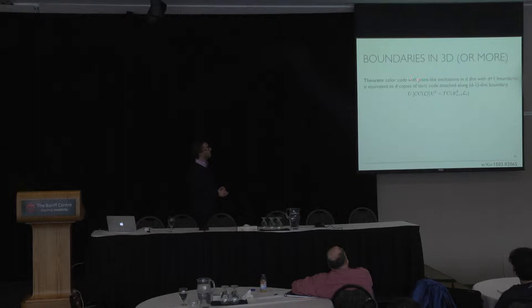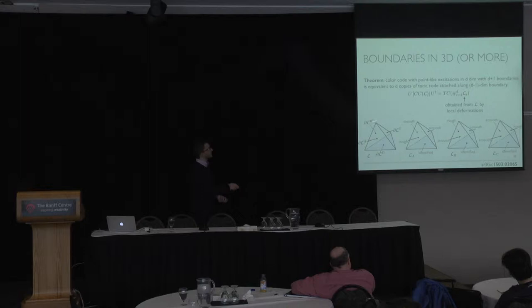In three dimensions, what we showed is that if we have the color code with point-like excitations, it will be equivalent to copies of the toric code attached along one of the boundaries.